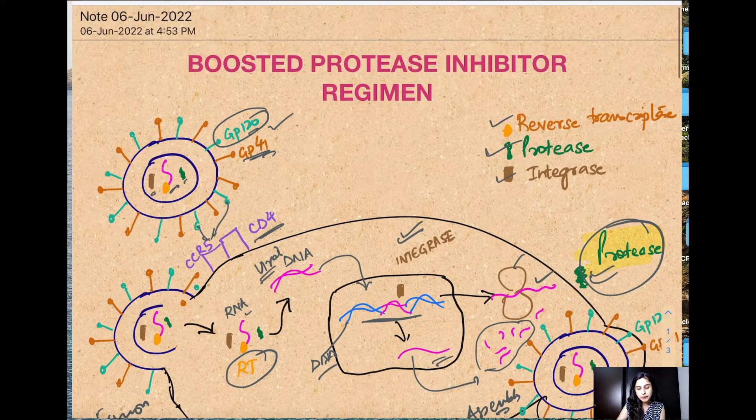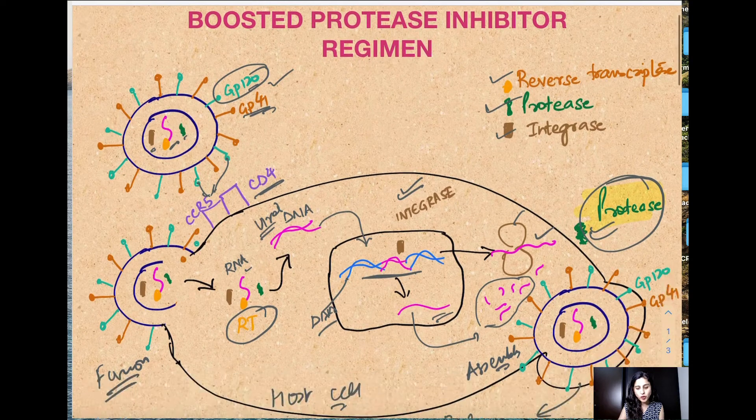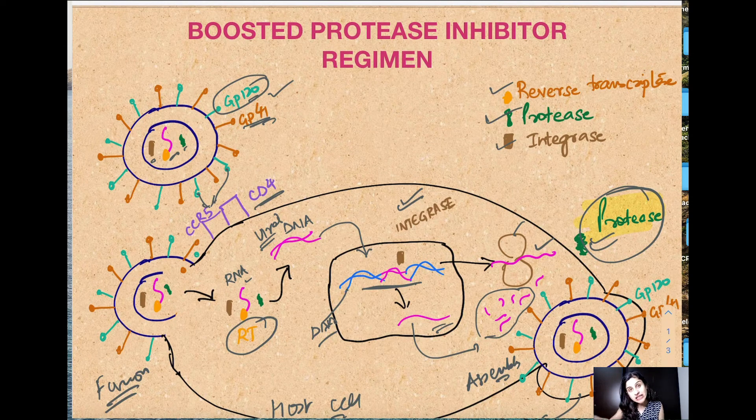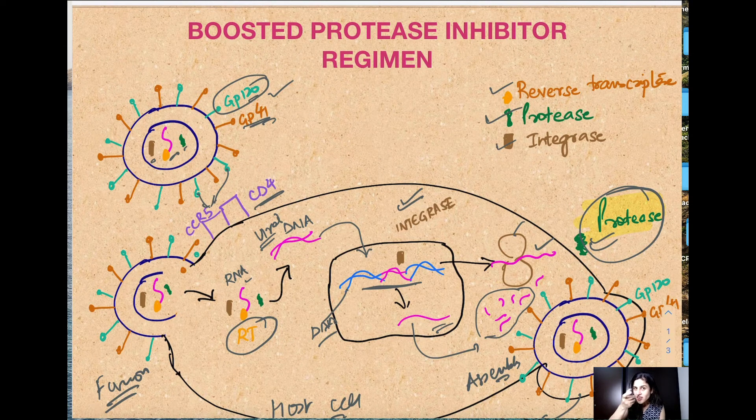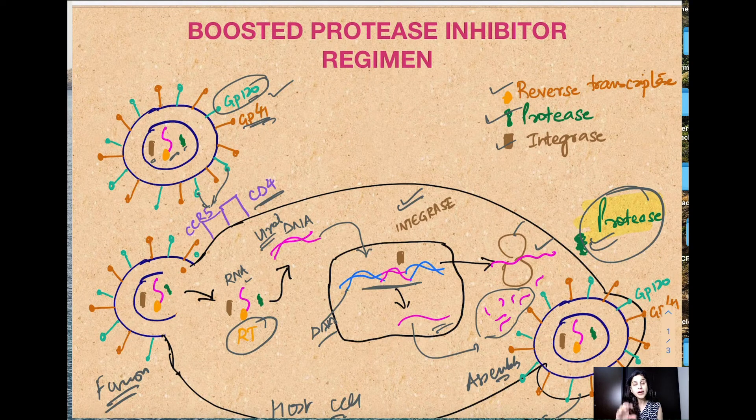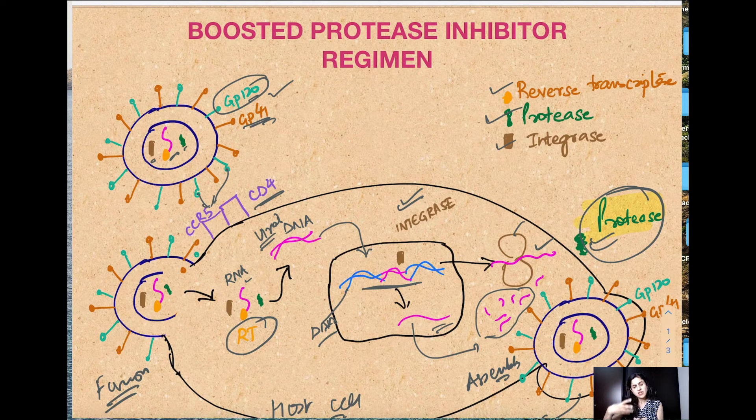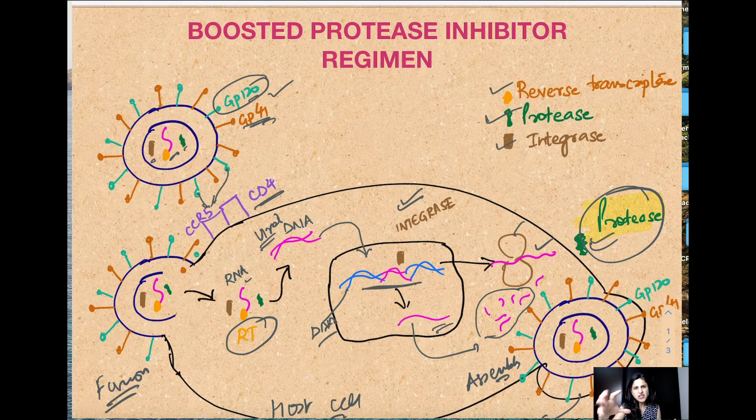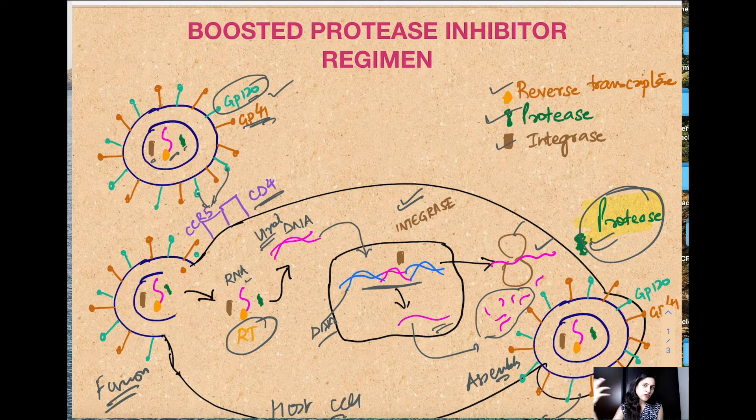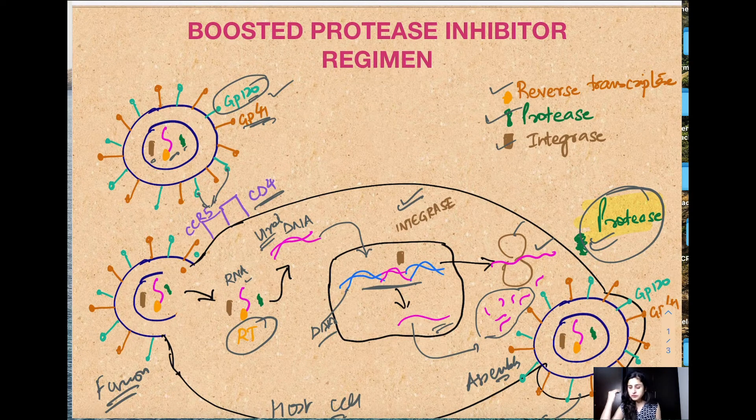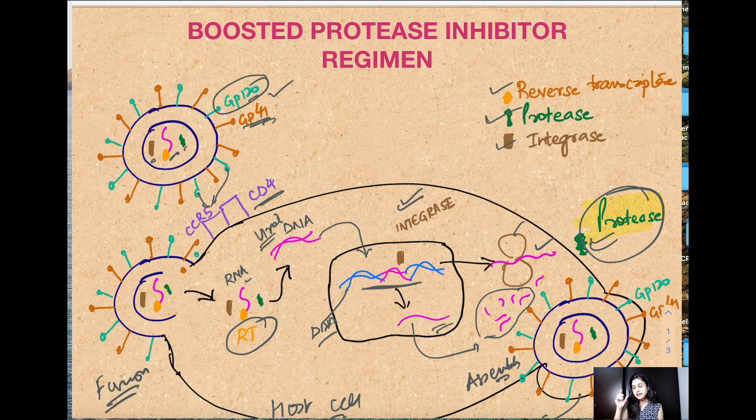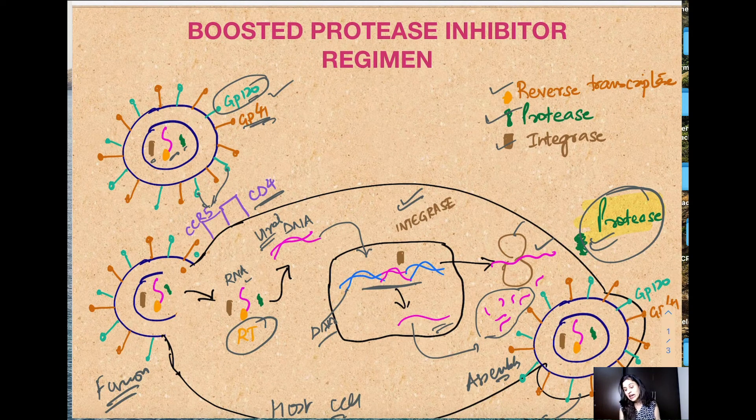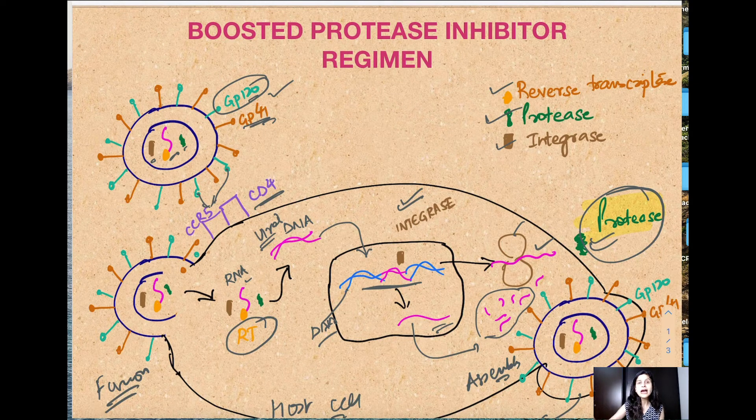So protease inhibitor, as the name suggests, is going to inhibit this enzyme protease. When the enzyme protease is inhibited, that means smaller structural proteins or functional proteins will not be formed. And if they're not formed properly, assembly may take place but the virus which is formed is not a very mature virus, not actually capable of going and infecting other cells.